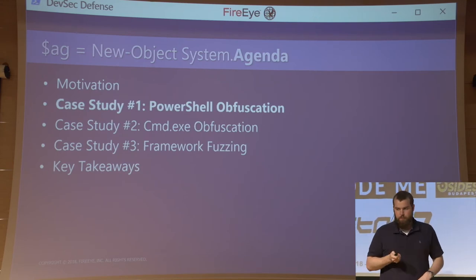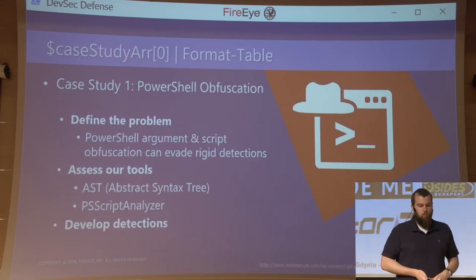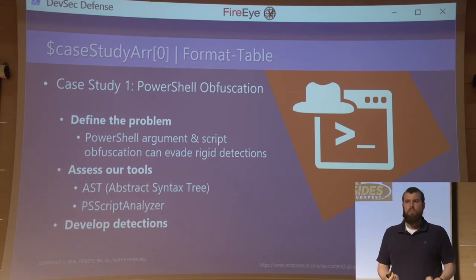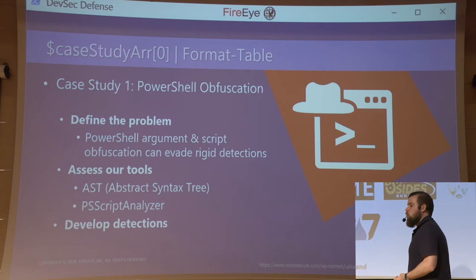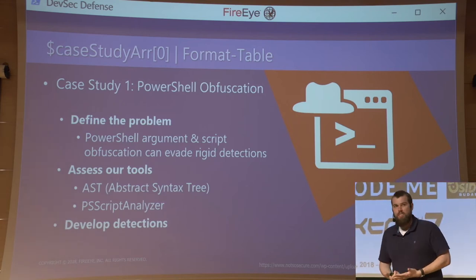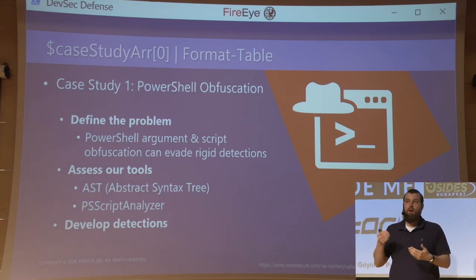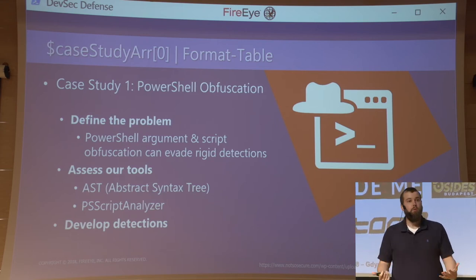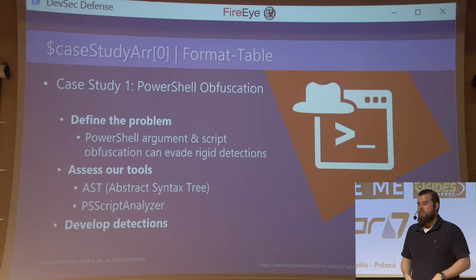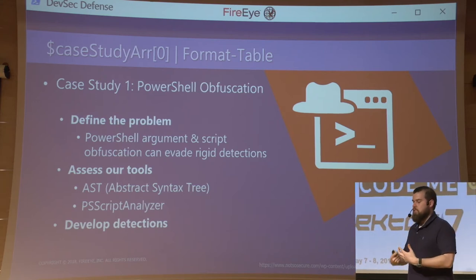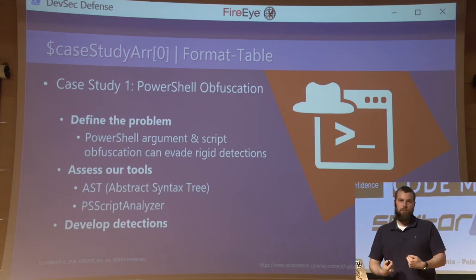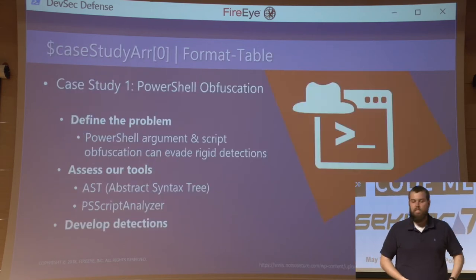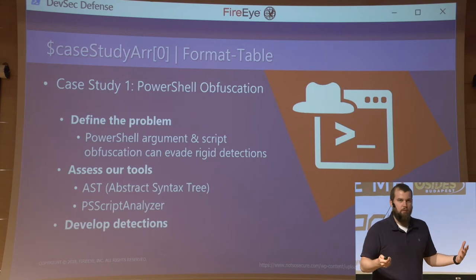First: PowerShell obfuscation. Whenever I'm approaching a problem of detection, it's important to define what the problem is, how prevalent it is, what tools we have at our disposal to detect it, and what tools we might need to build. Sometimes we need to build tools if they don't exist. Then develop detections and go back and test: does this need to be tuned to make it more effective? The problem is PowerShell argument and script obfuscation can evade a lot of rigid detections.